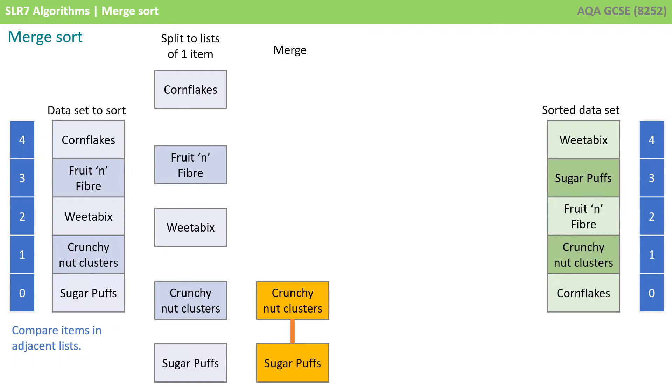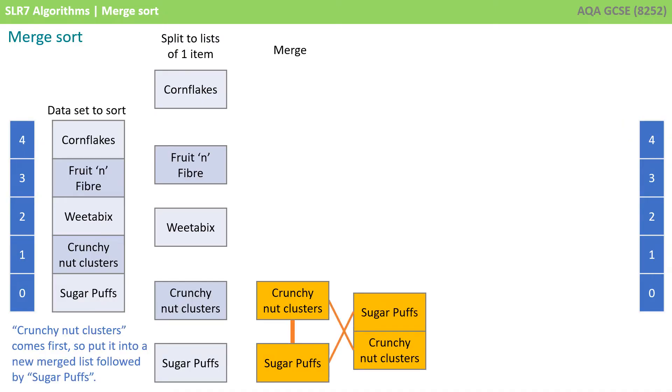We then compare items in adjacent lists, so we compare sugar puffs to crunchy nut clusters. Crunchy nut clusters comes first, so we put it into a new merged list, followed by sugar puffs.